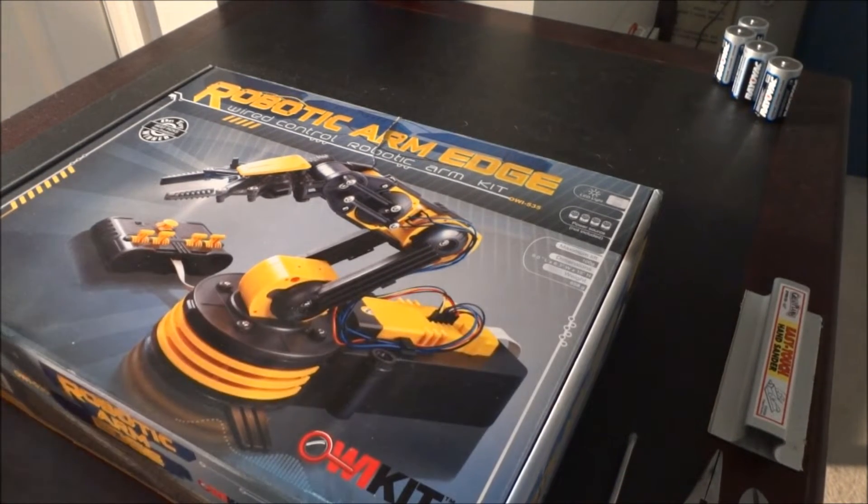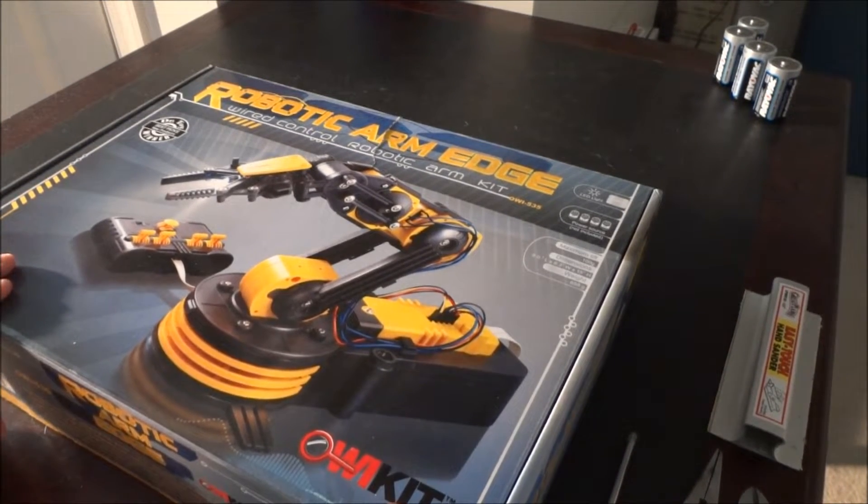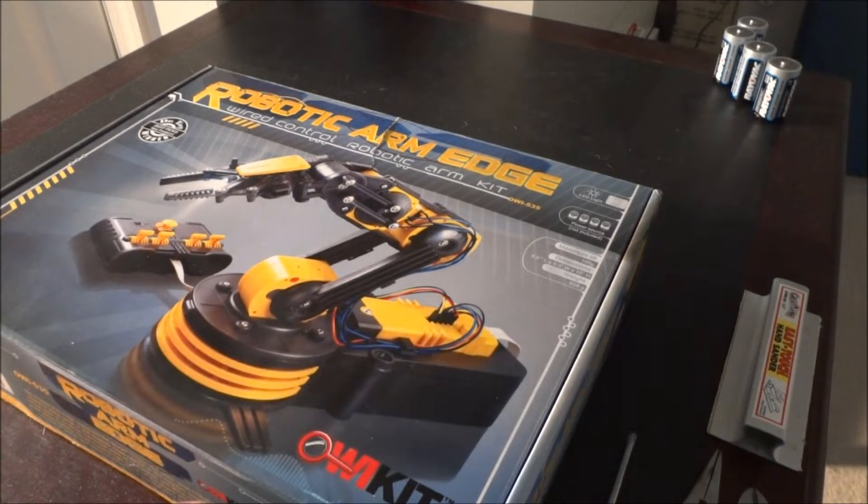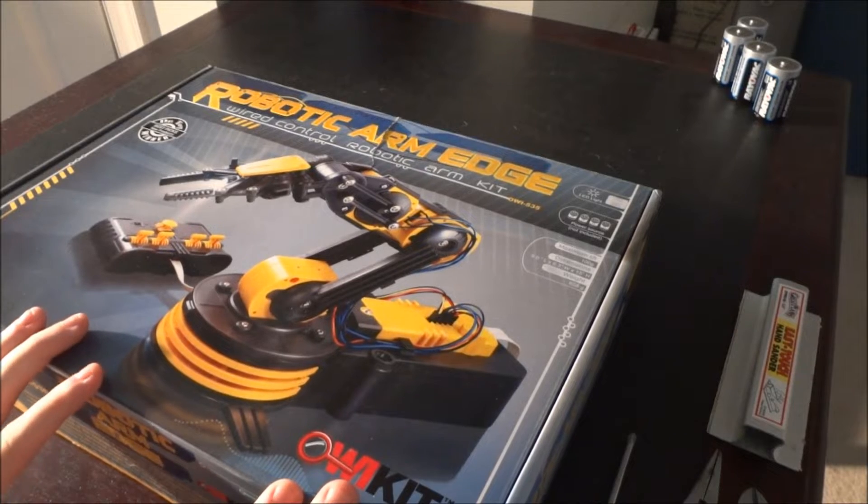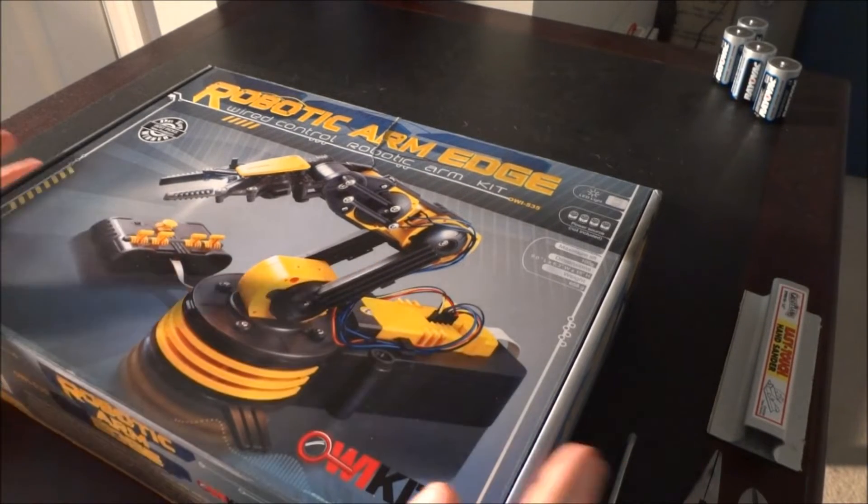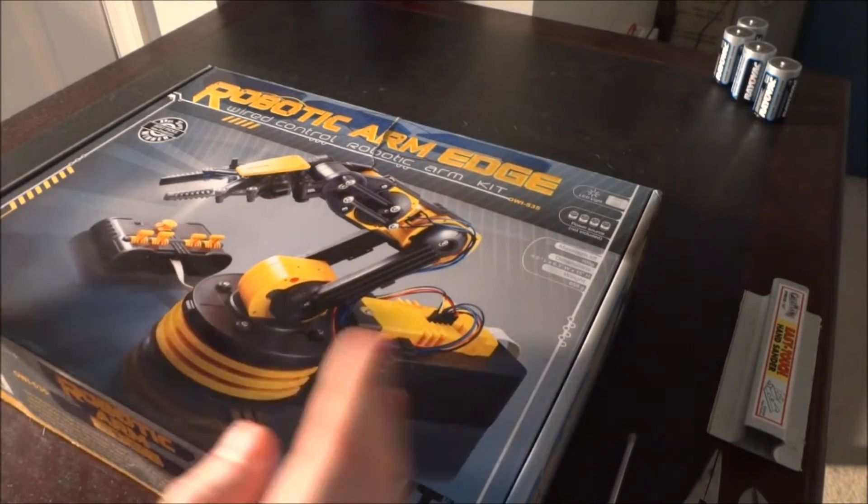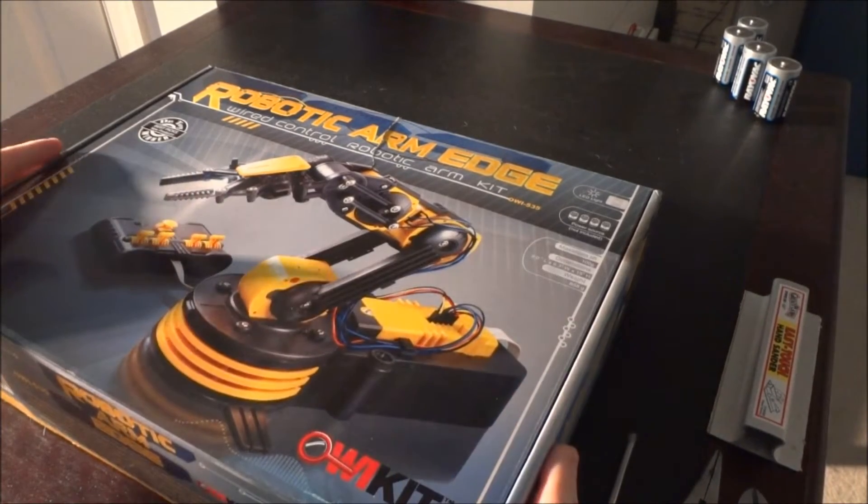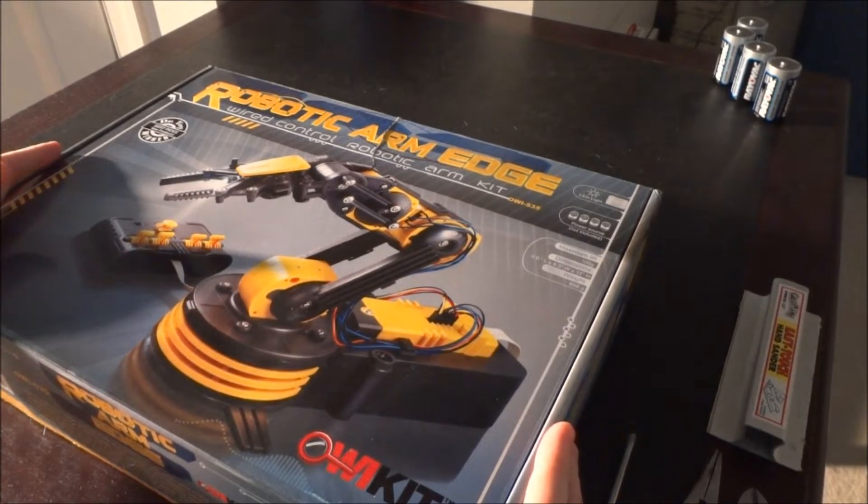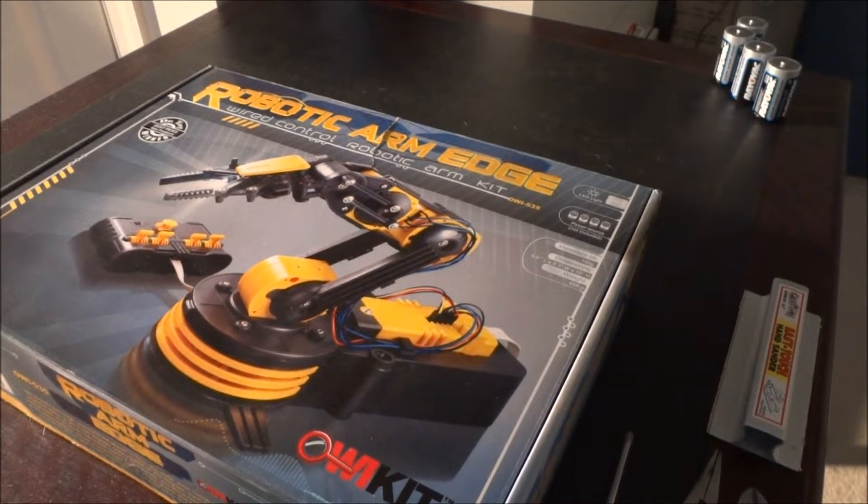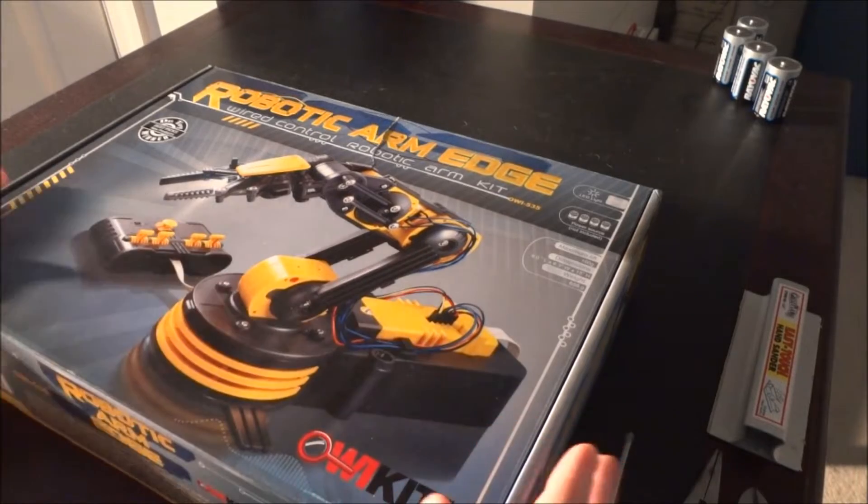Today I'm going to unbox and build this AOI robotic arm edge kit. You can get it directly from AOI's website or from Amazon for just under $40. It's an interesting entry-level robotics arm kit that gives you an introduction to both electronics and mechanical aspects of building.